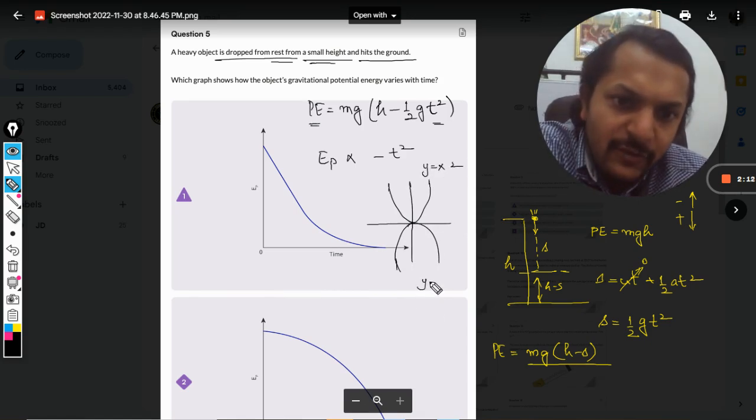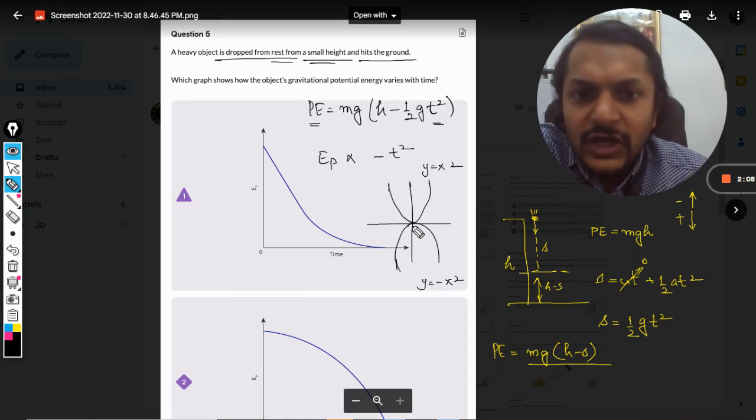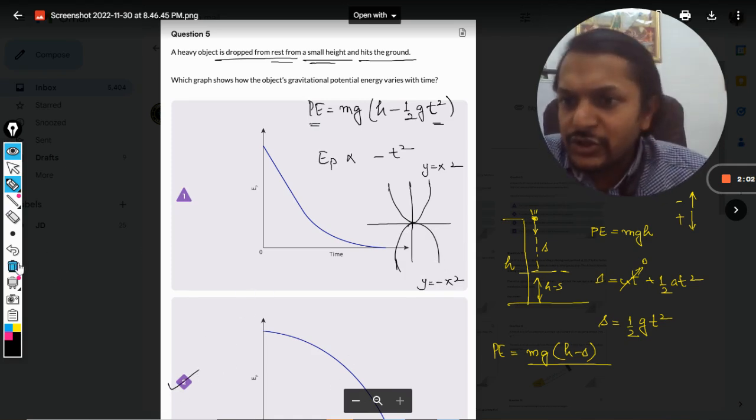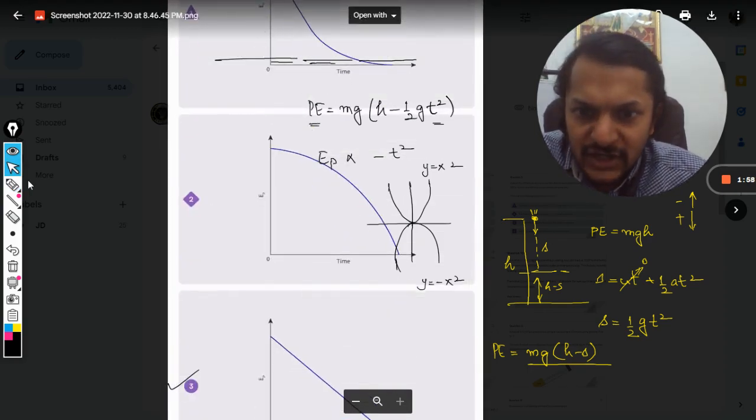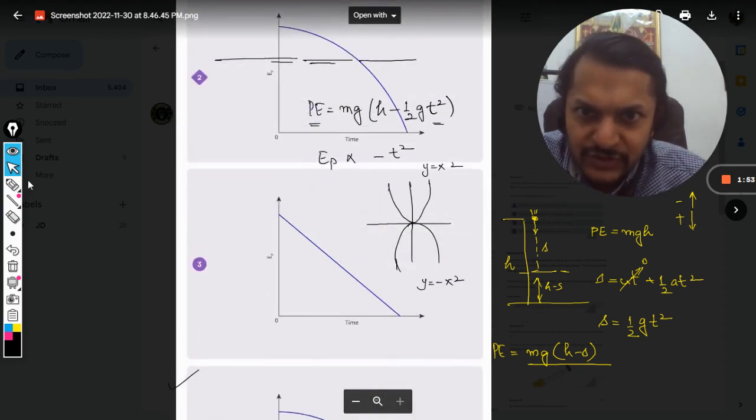Y equals X squared, and Y equals minus X squared. The graph is like this. So the graph should look like this. It can be option number 2, or I have to now see which options are available. Yes, option number 2 and this is option number 3.